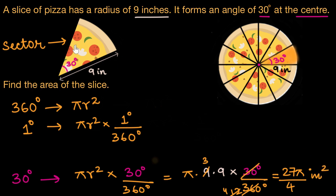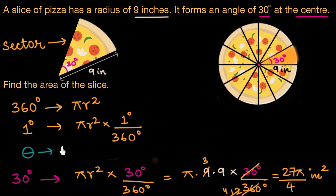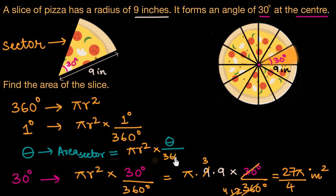So the area of our pizza slice is 27π/4 square inches. This is how we find the area of any sector of a circle. In your textbook you'll see a formula which is a generalized version of this process: for a sector making an angle of theta at the center, the area equals πr² times theta divided by 360 degrees.